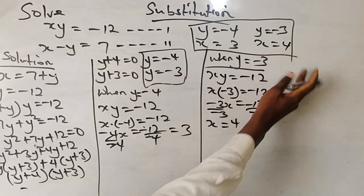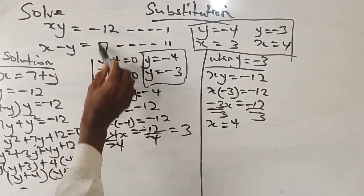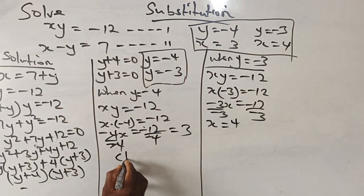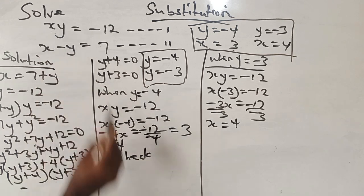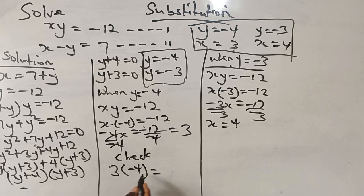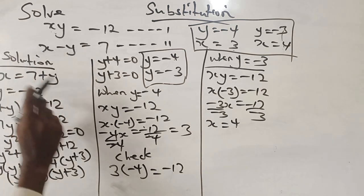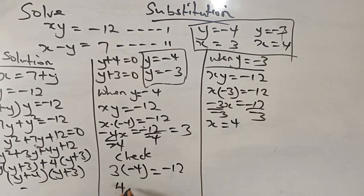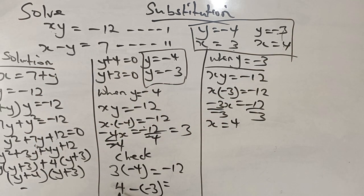These are our two sets of answers. Let us verify: in the first case, x equals 3 and y equals minus 4 — so 3 times minus 4 equals minus 12, which checks out. For the second case, checking equation 2 with x equals 4 and y equals minus 3: 4 minus minus 3 is 4 plus 3, which equals 7. Both solutions are verified.